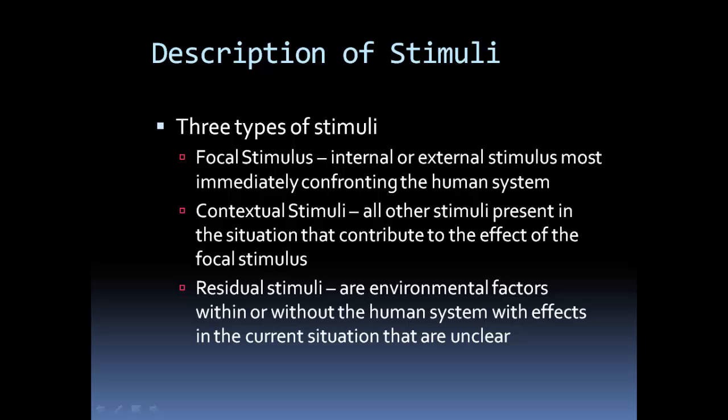First we'll cover the stimuli, which she breaks into three pieces. Focal stimuli are the most immediate stimuli present. An example would be a patient with a cut finger — the cut finger would be the stimuli. Contextual stimuli are in the environment and contributing to the focal stimuli, such as the patient was slicing onions for dinner.